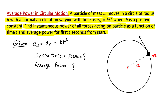We also have to find the average power for the first t seconds from the start. What is given in this problem? We have been given normal acceleration, also called radial acceleration, which equals bt squared. We have a mass m moving in a circle of radius r. These are known, and our objectives are to calculate instantaneous power and average power.